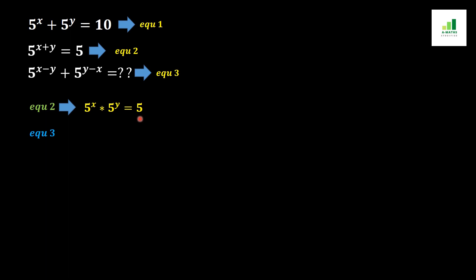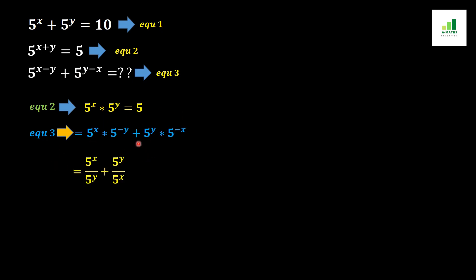Next, we take equation number 3 and rewrite it in individual form. Breaking the exponents, we get 5^x · 5^(−y) plus 5^y · 5^(−x). The negative exponents move from numerator to denominator, giving us 5^x over 5^y plus 5^y over 5^x.